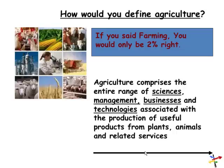In agriculture you have different sciences, different managements, different businesses, and technologies — all associated with the production of useful products from plants, animals, and related services. So if you were asked to define agriculture and said farming, you'd only be 2% right, and you need a deeper understanding of how to define agriculture.